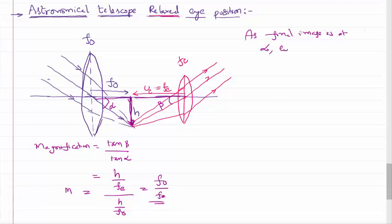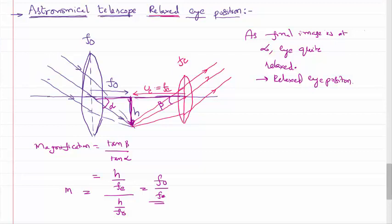As the final image is at infinity, your eye won't get strained — the eye is quite relaxed. That's why people call this position the relaxed eye position. In the relaxed eye position you will be able to see the image in a relaxed way, but your magnification is compromised — you are not going to get a better magnification. In a non-relaxed or strained eye position, how do we get better magnification? I will explain that in the next video lesson.